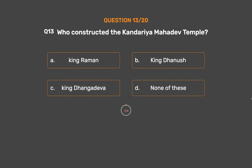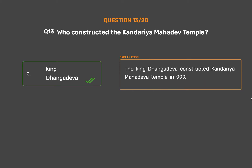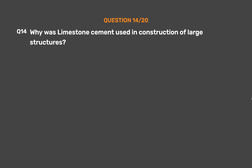The correct answer is Option C: King Dhangadeva. King Dhangadeva constructed the Kandariya Mahadeva temple in 999.